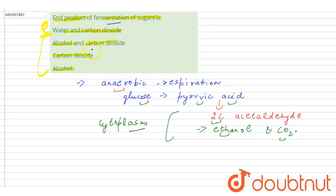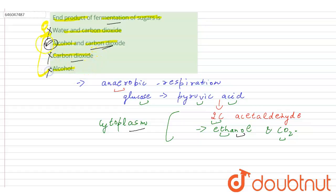So the end product of fermentation of sugars is alcohol and carbon dioxide — that is, ethanol and carbon dioxide. Water and carbon dioxide is incorrect because water is not liberated. Carbon dioxide alone is incorrect, and alcohol alone is also incorrect. Therefore, the correct option is the second one: alcohol and carbon dioxide.